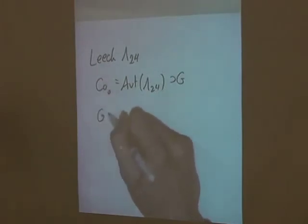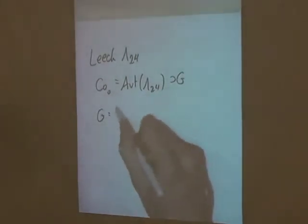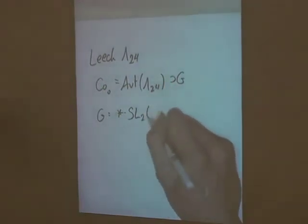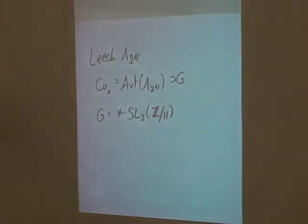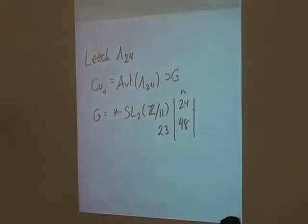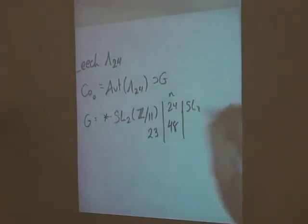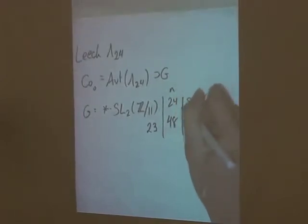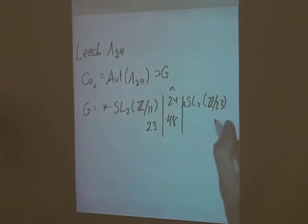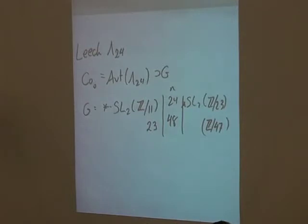For instance, there is a construction which has G being SL₂(Z/11Z). If you then change that 11 to a 23, that gives you a lattice of rank 48, and that is indeed one of the known extremal lattices of rank 48. Likewise, the Leech lattice contains a subgroup SL₂(Z/23Z), possibly with some twisting factors, and you can modify that from 23 to 47, and that does give you another one of the known lattices of rank 48.